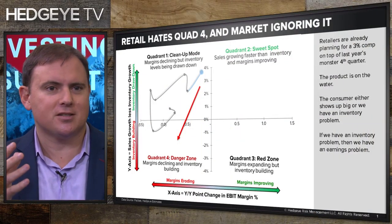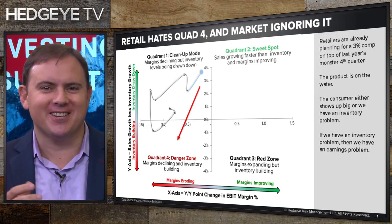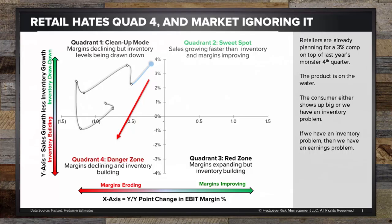I want to walk through a couple of charts and sync what Keith is saying macro-wise with where I'm coming up micro-wise. The first thing I want to hit on is what I call my sigma analysis. On the vertical axis is your sales-to-inventory spread — sales growth minus inventory growth. If sales are growing plus 10 and inventories are growing plus 4, you show up at a positive 6. Right now it's as high as it's been over the course of two years, so the sales-inventory spread is really, really positive.